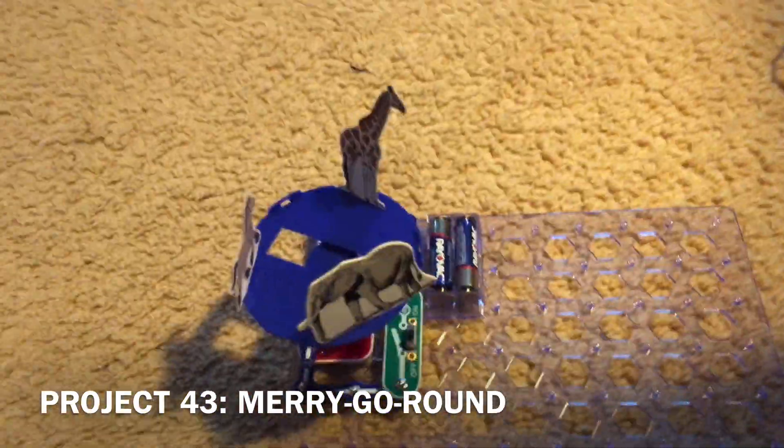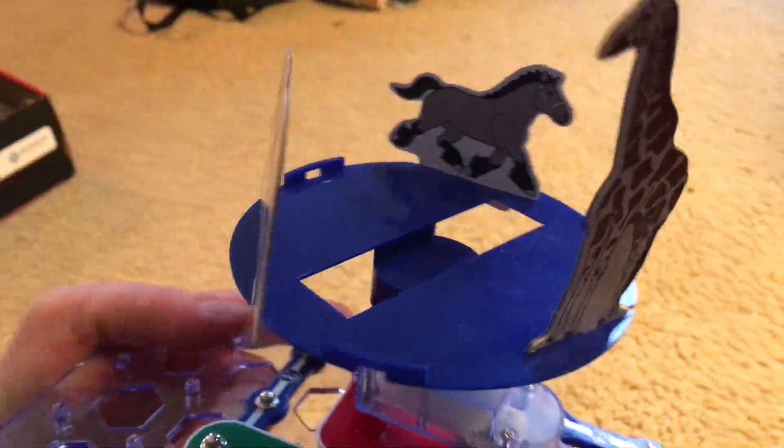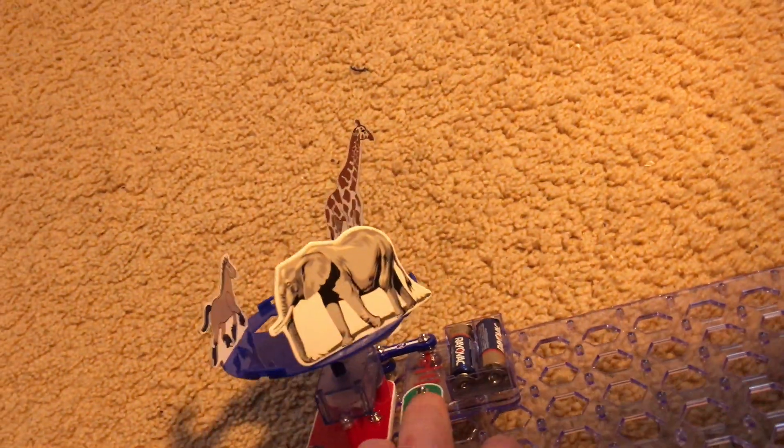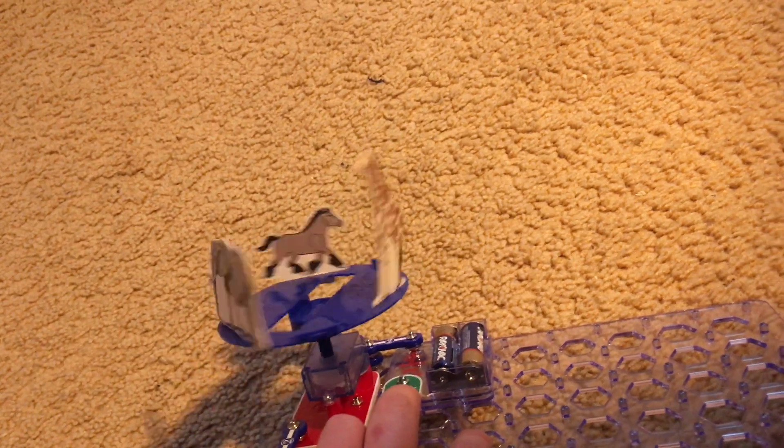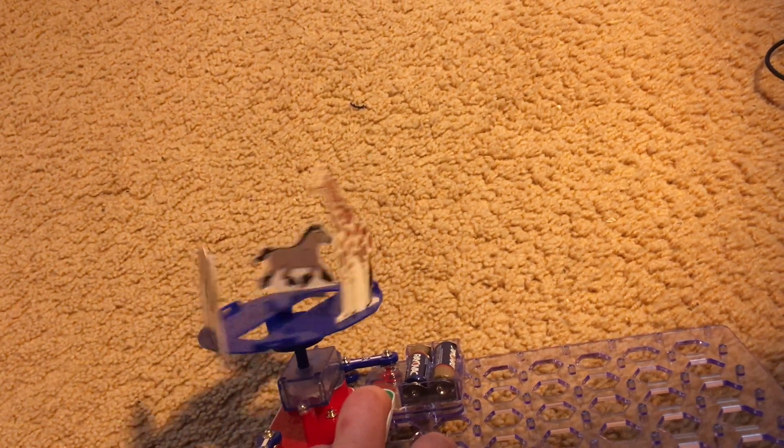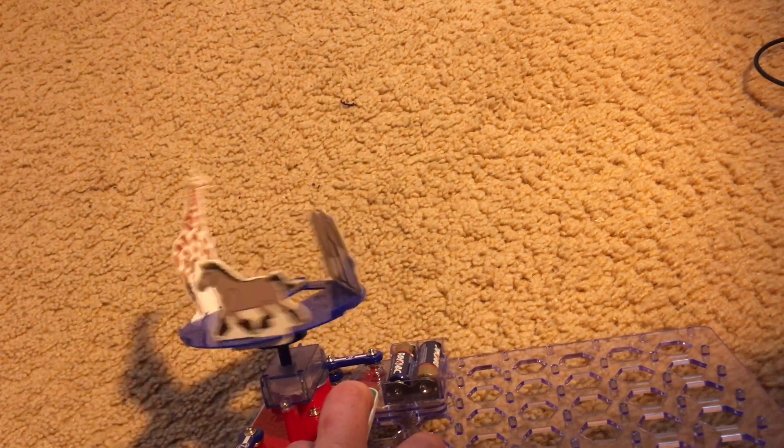Project 43 is merry-go-round. I placed three of the cutouts, all the animals on the merry-go-round. They include a horse, an elephant, and a giraffe. And then I am going to turn on the slide switch. And the merry-go-round rotates, just like a real life merry-go-round which has animals.